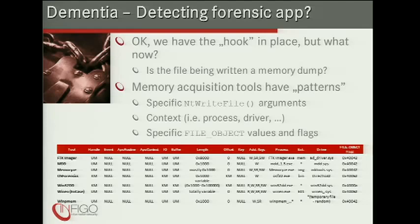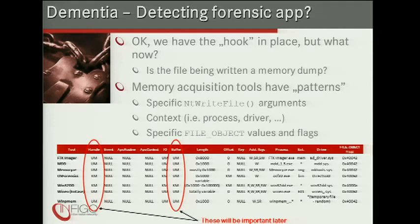Once the hook is in place, we need to know whether the file being written is a forensic memory dump. It turns out all memory acquisition tools have specific patterns — specific NtWriteFile arguments, context, process, and file object flags. A table in the presentation summarizes this research. For example, FTK Imager always has the handle in user mode, event/APC routine/APC context are null, IO status block in user mode, buffer in user mode, and length always 0x8000. Two especially interesting columns are 'handle' and 'buffer' — whether they originate from user mode or kernel mode.